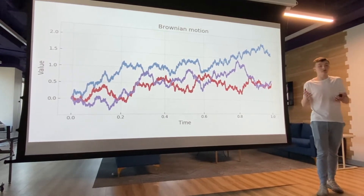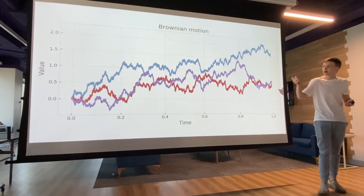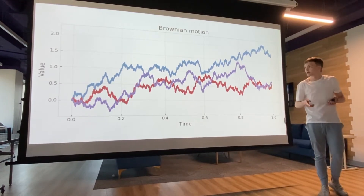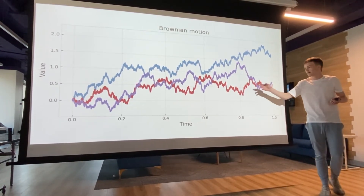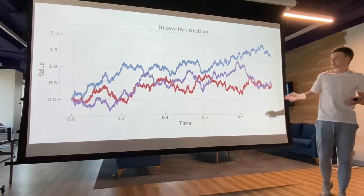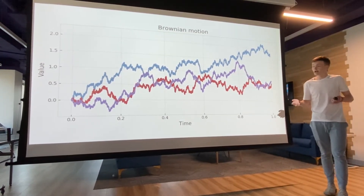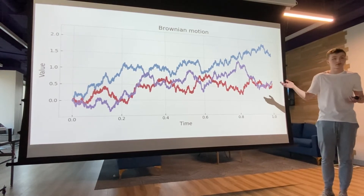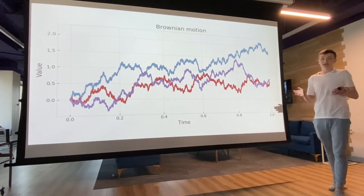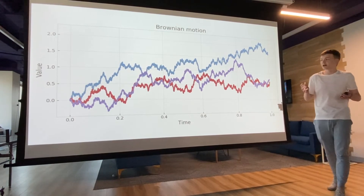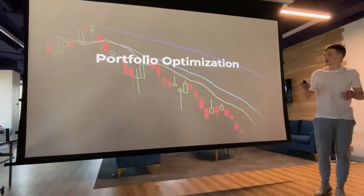Financial markets do evolve like natural systems, despite what you may think. And this is due to Brownian motion. All Brownian motion is is this random walk up and down in these little squiggles that you can see here. And this is exactly how a natural weather pattern would occur. All this means is that we can model financial systems as natural physical systems.